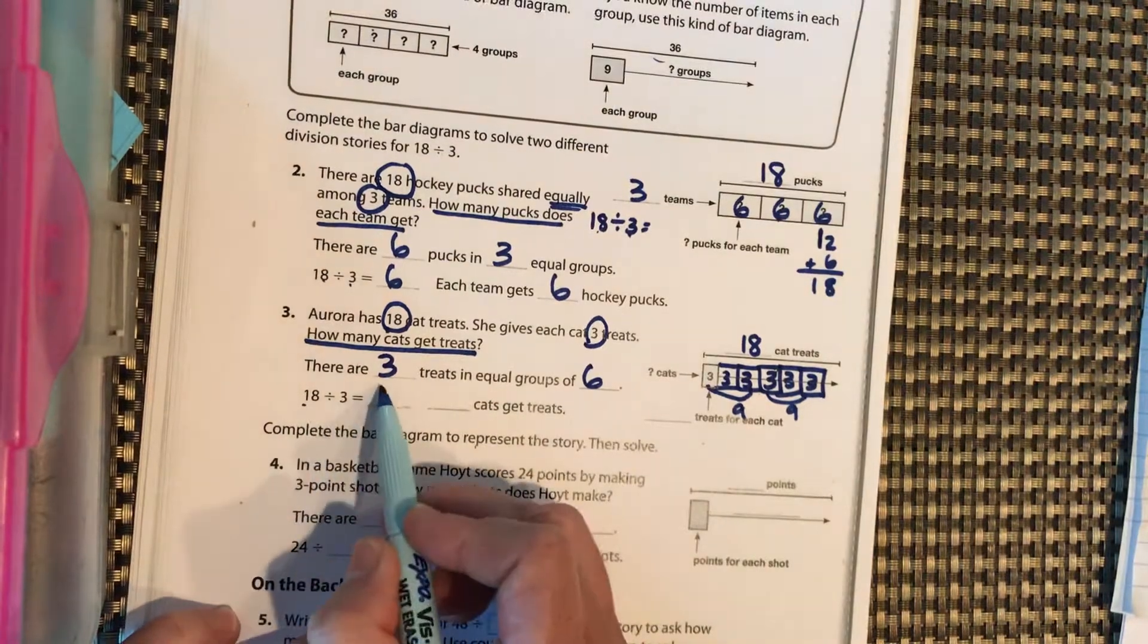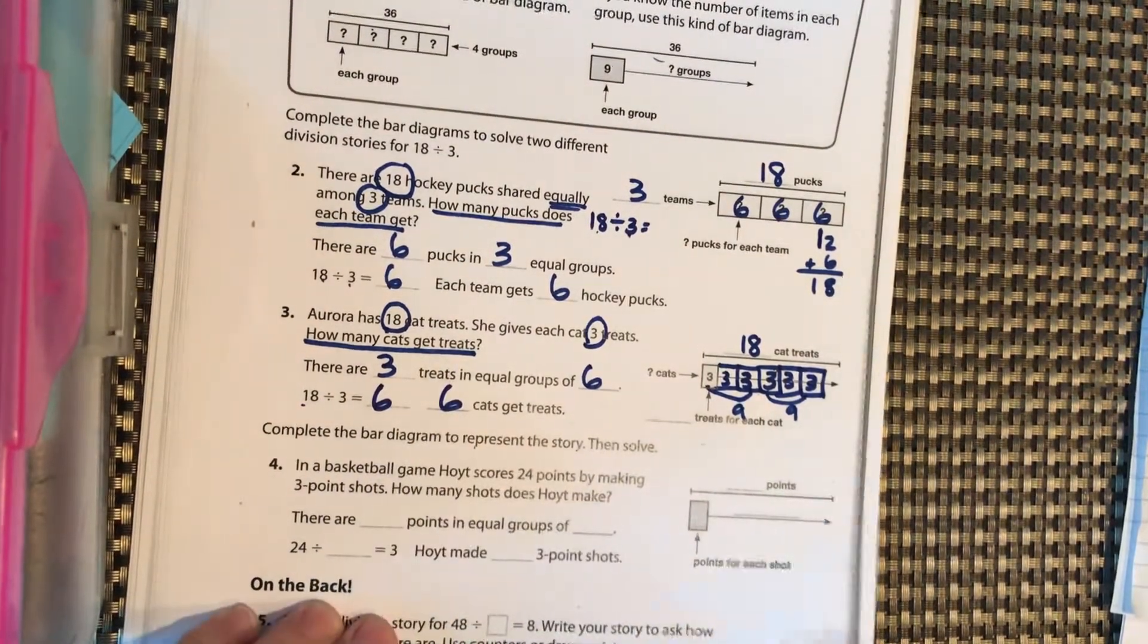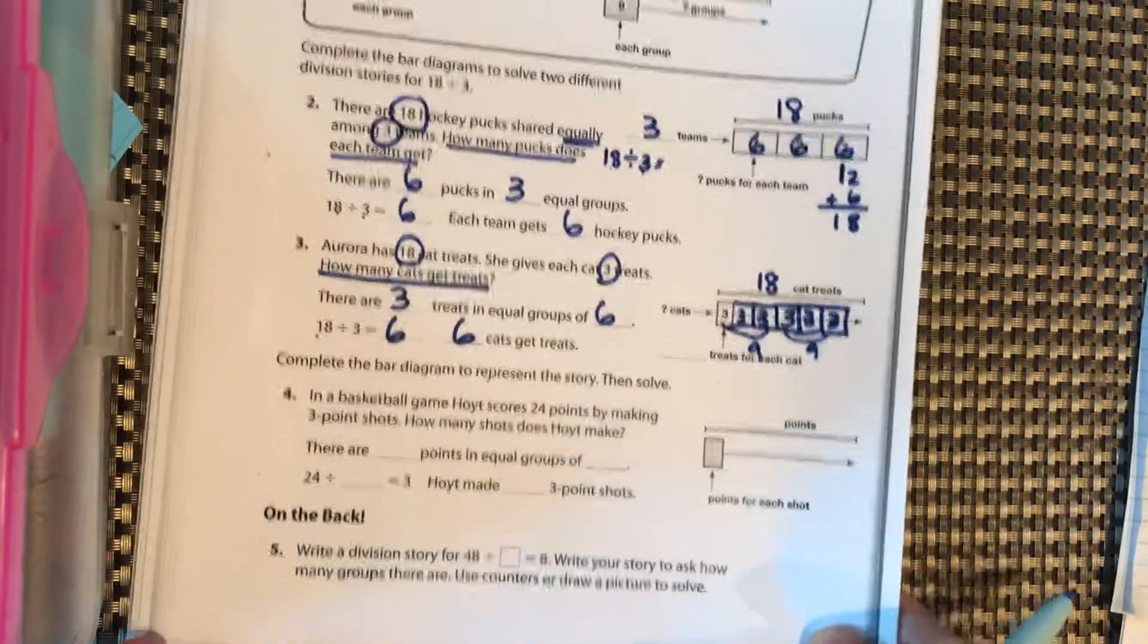So there are three treats in a total of six equal groups. 18 divided by three is six. Six cats get treats.